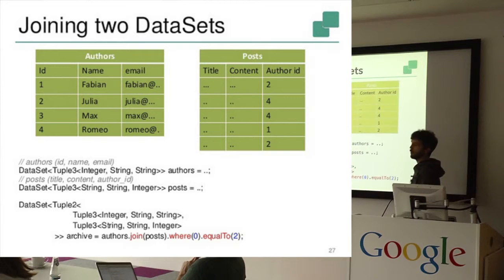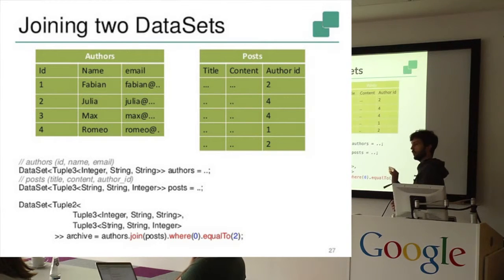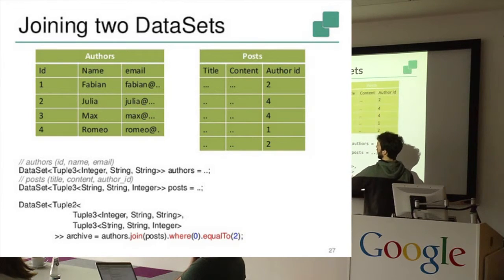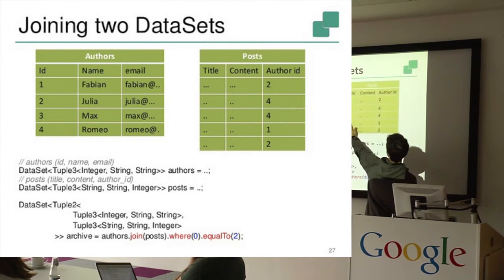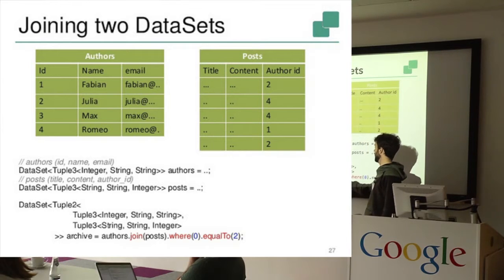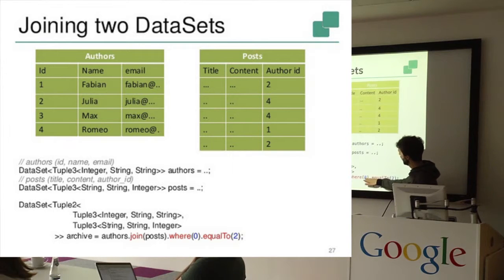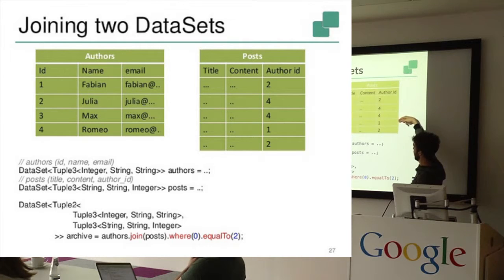And what we could do now, for example, if we wanted to get a list with authors and all the posts they wrote, we could join these two tables. So we would see here for example that Fabian is the author of this post. So and we want to get a list. So we join the authors with the post data set, and actually match only if we find an ID. So this is why it's a zero here, which matches the author ID here in the post data set.